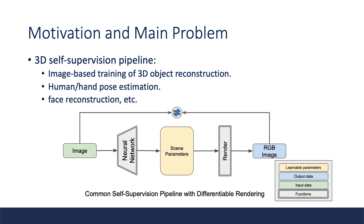Also, it has lots of applications in 3D self-supervised tasks like 3D object reconstruction, human or hand estimation, and face reconstruction from image. Given the input image, we can design a neural network to reconstruct the scene, and then the renderer will generate the rendered image. Intuitively, the rendered image should be consistent with the input image. So we can design a photo consistency loss and optimize the reconstruction network if the renderer is differentiable.